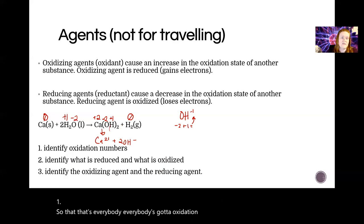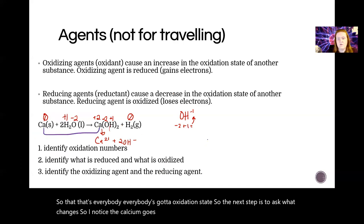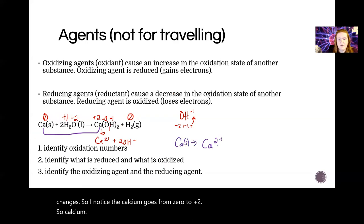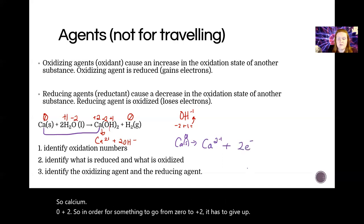Everybody's got an oxidation state. The next step is to ask what changes. I notice the calcium goes from zero to +2. In order for something to go from zero to +2, it has to give up two negative charges, so we're producing two electrons.